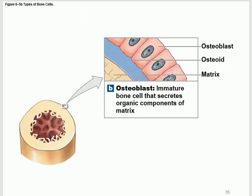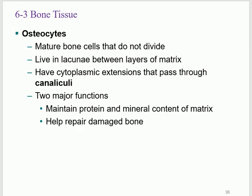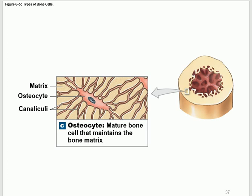Osteoblasts are immature and make the bony matrix, then they mature and become osteocytes. Osteocytes no longer divide; their function is to maintain and modify. Looking at the picture, osteocytes sit inside spaces called lacunae. Osteoblasts work in these lacunae and mature into osteocytes within them.